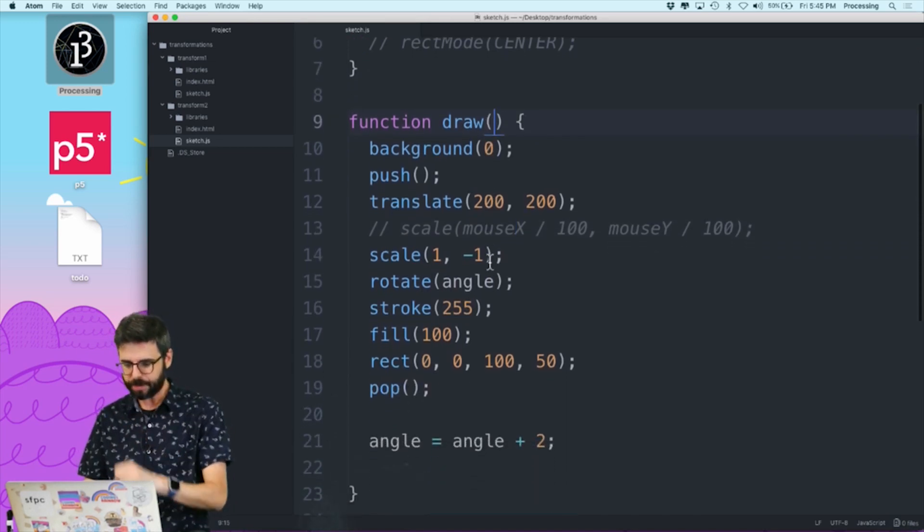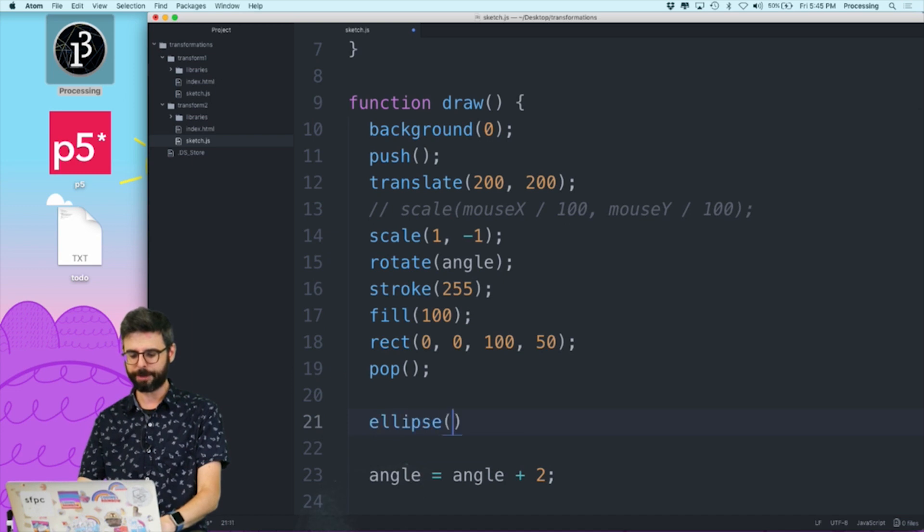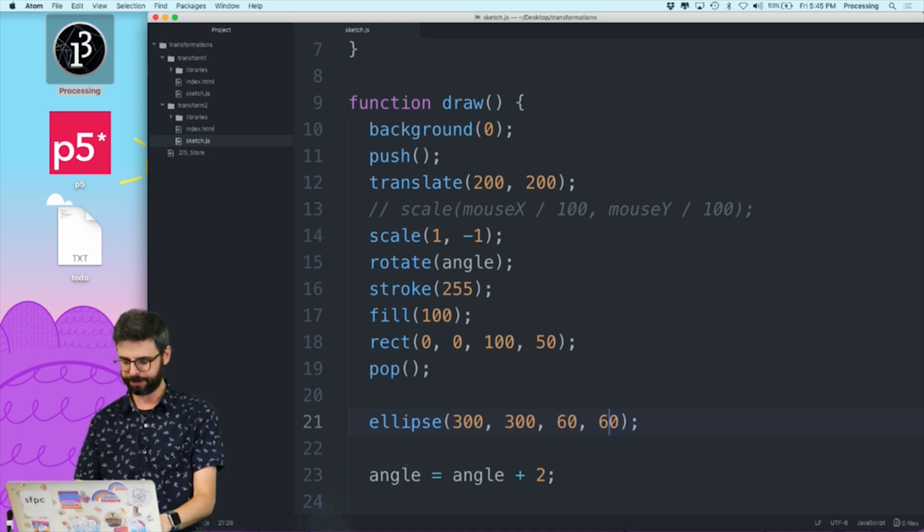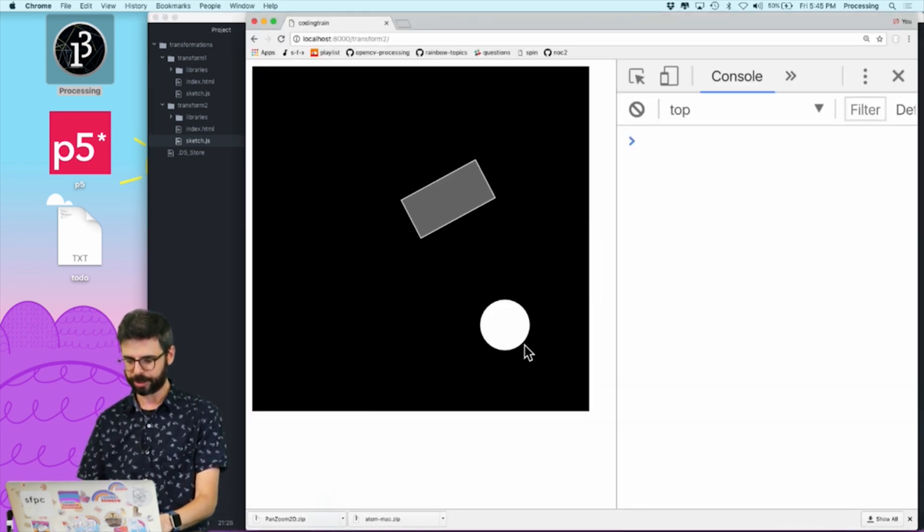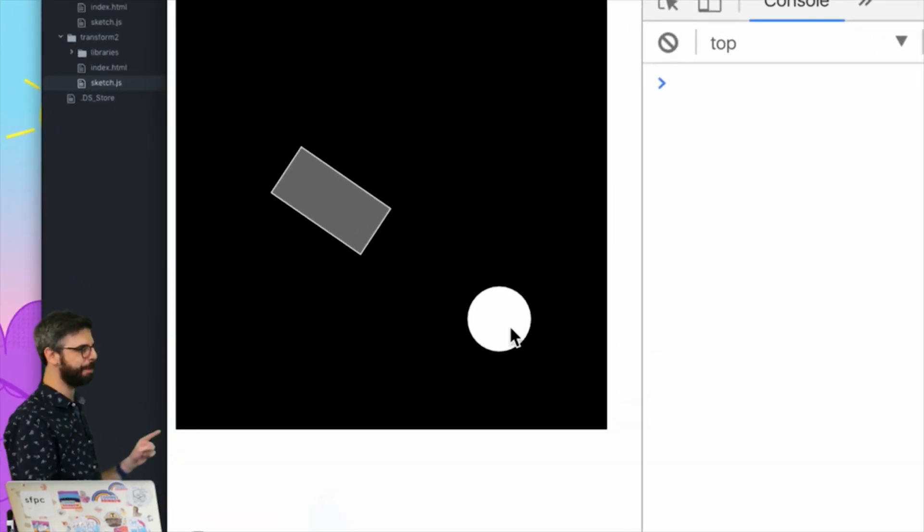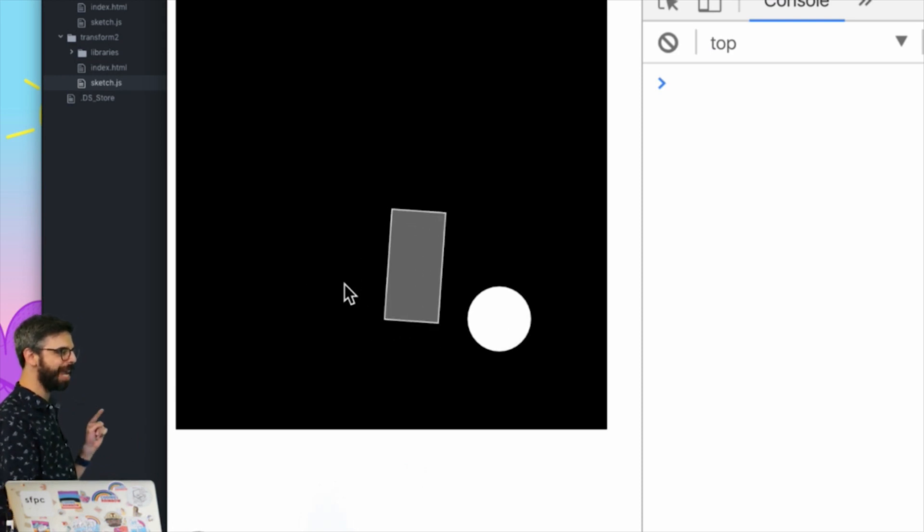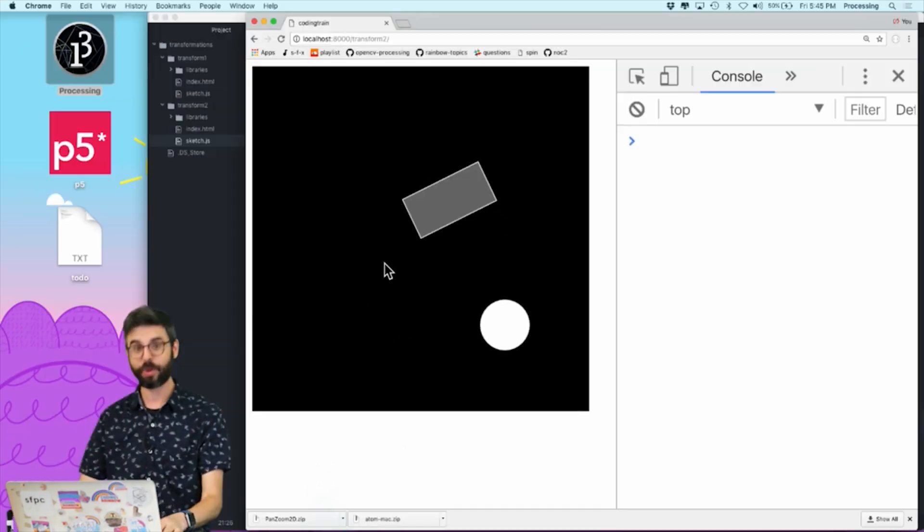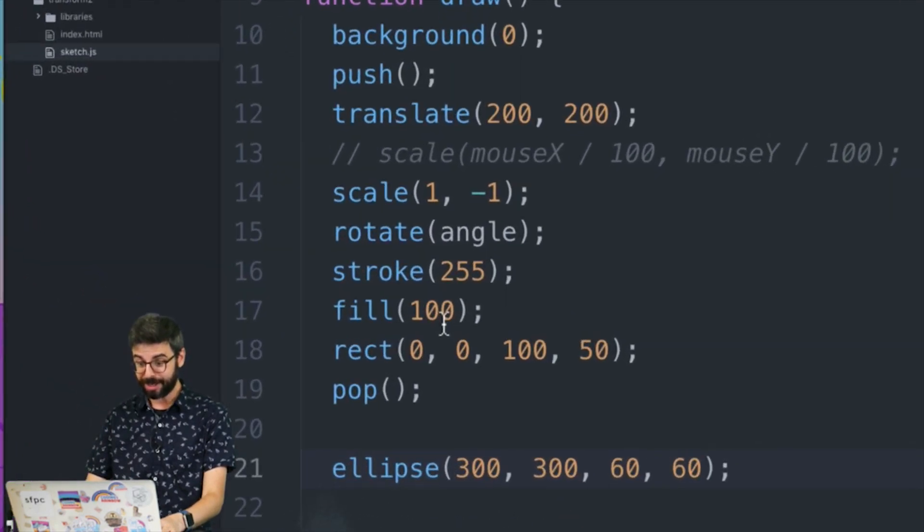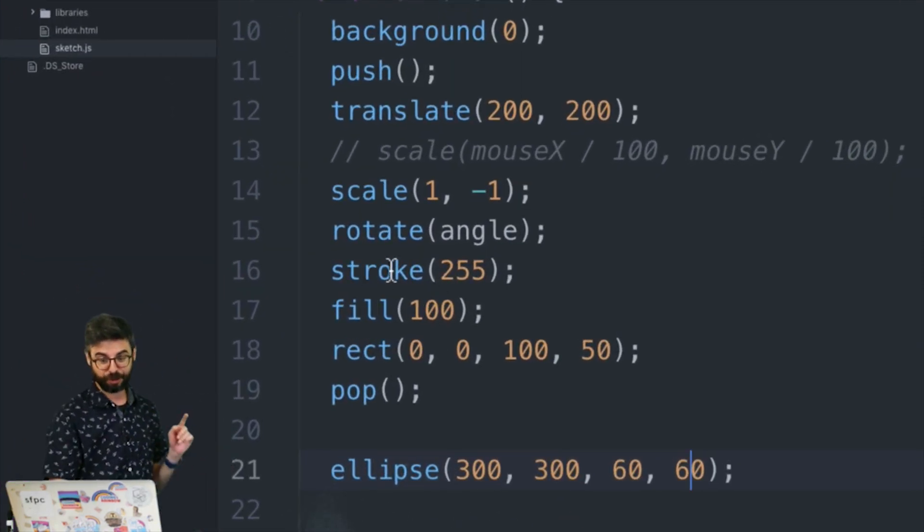So for example, if I go back to this code, and at the end here, if I just want to draw another ellipse, another ellipse is going to be at 300, 300, 60, 60. And I hit refresh. Now look at this. This ellipse is not gray with a white stroke, with a white outline. It should be, because I said stroke 255, fill 100, drew the rectangle.